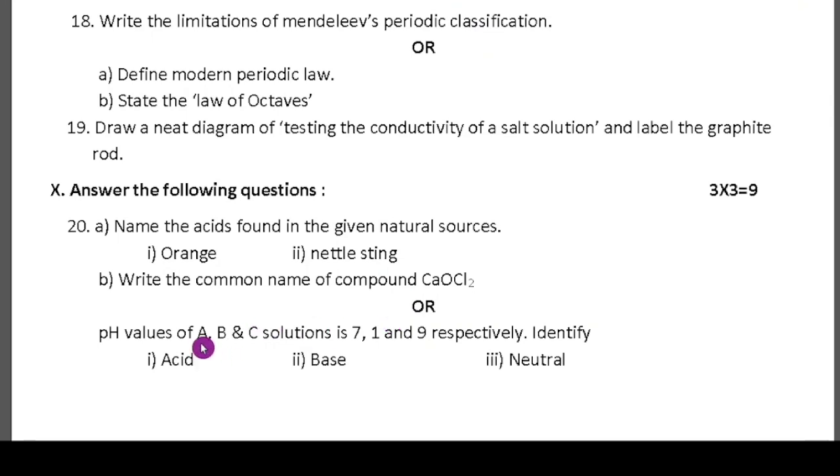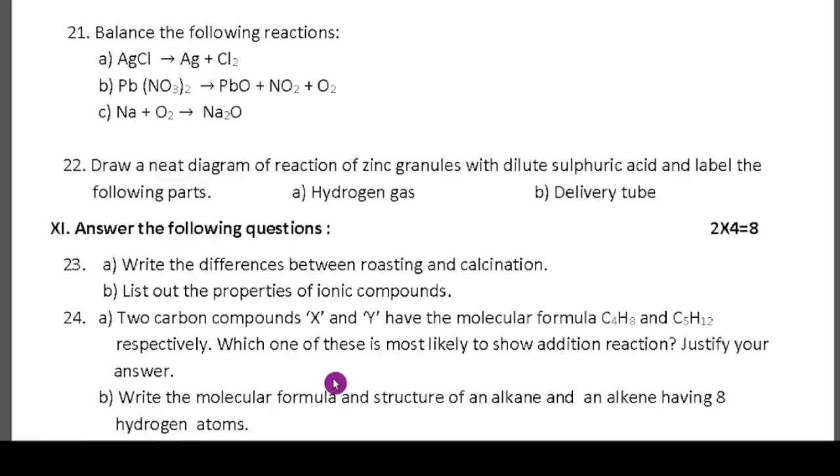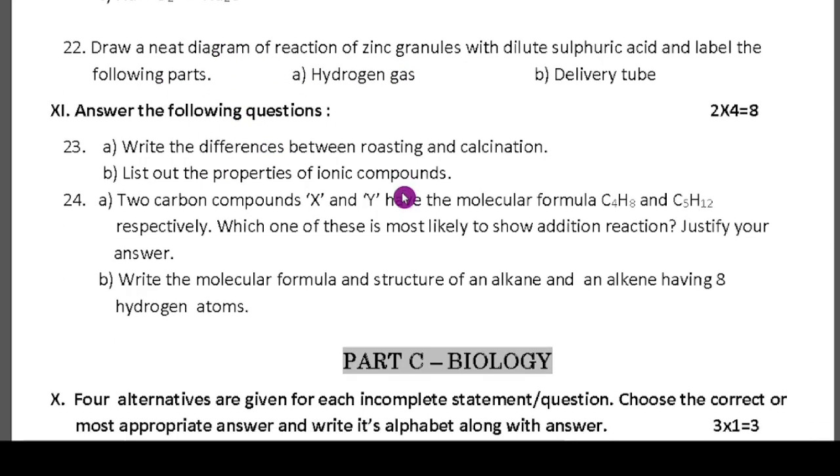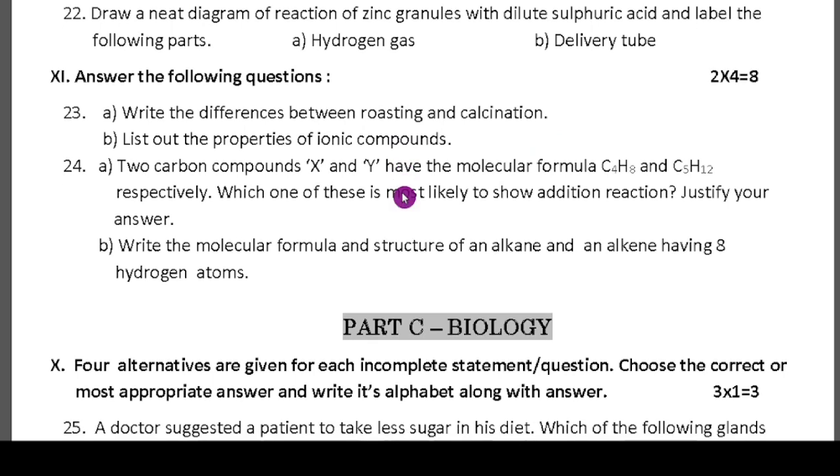Here pH value of A, B, and C solutions are 7, 1, 9 respectively. Identify base, acid, and neutral. 100% - seven is neutral, one is acid, nine is base. Here they are given for balancing equation, you have to balance. Then here they have given the diagram. Last main: four marks questions, two questions are there, each question carries eight marks.